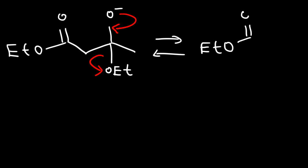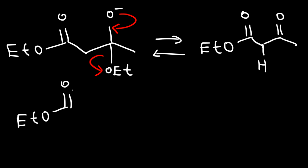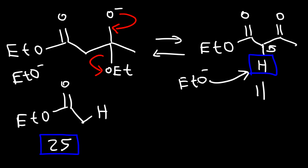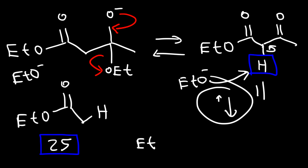Right now we have a beta-keto ester. This hydrogen is highly acidic. Our original ester has an alpha hydrogen with a pKa of about 25, and it's not very acidic compared to the pKa of this hydrogen, which is about 11. Since we have a basic solution, the ethoxide ion in the solution is going to immediately remove this hydrogen. This last step is not really reversible — it's product favored.